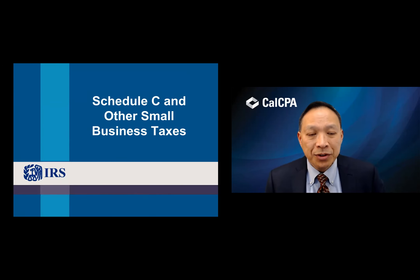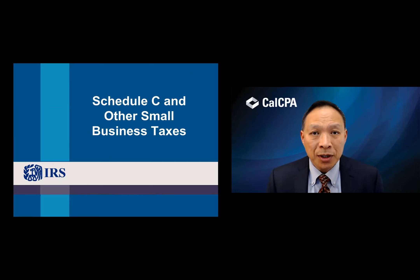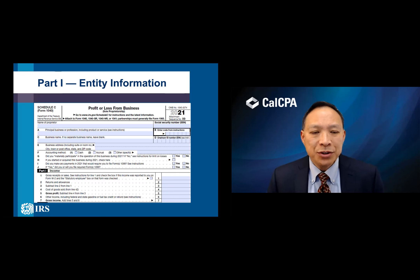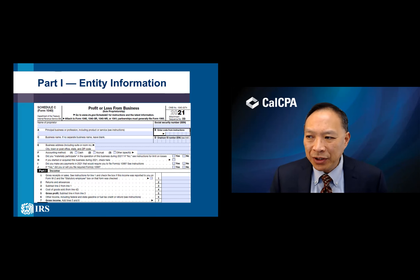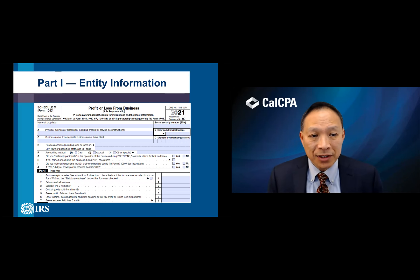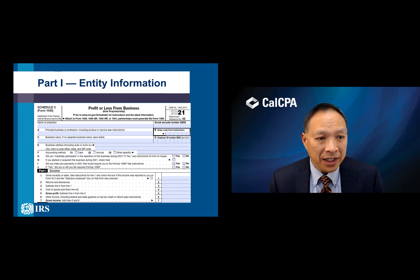Today we're going to talk about Schedule C and small business taxes. Schedule C is for sole proprietors — it's when you have your own business, and that income gets reported on Schedule C. Let's take a look at the form. This is the 2021 version of Schedule C.